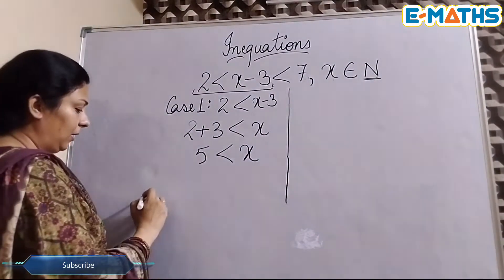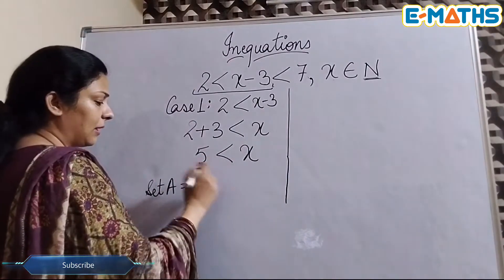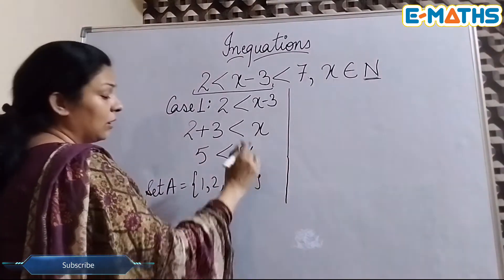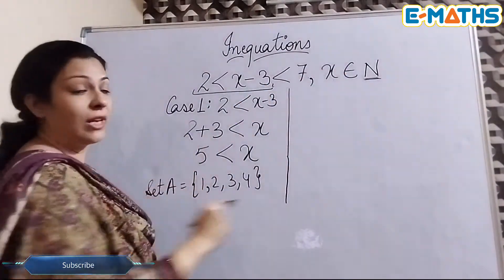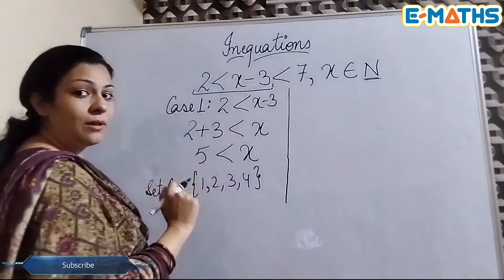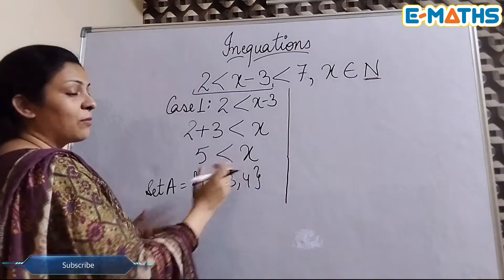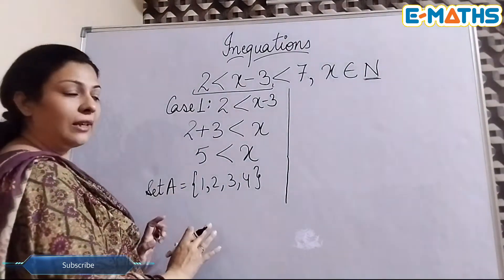So the set A will be all the natural numbers less than 5. So that will be 1, 2, 3, and 4. It will be clearly mentioned in the question what values you have to take for x. So here x belongs to natural numbers. Natural numbers start from 1 and go to infinity. So we will take all those numbers which are smaller than 5, we will start from 1 to 4. So this is our set A.